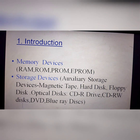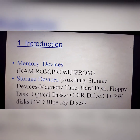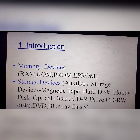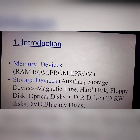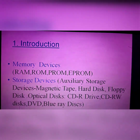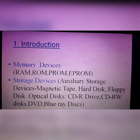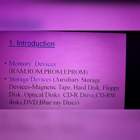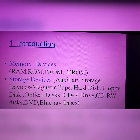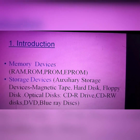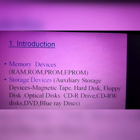Student Class 4, you can see the memory devices are RAM, ROM, PROM, and EPROM — so these are the memory devices. Then the second category is storage devices — Auxiliary storage devices: Magnetic Tape, Hard Disk, Floppy Disk, Optical Disk, CD-R Drive, CD-RW, DVD, and Blu-ray Disk. So all of these are storage devices.